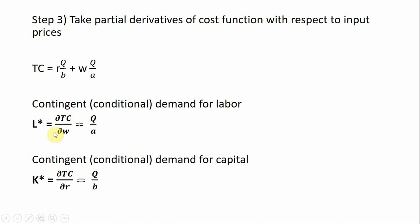Taking the partial derivative of total cost with respect to R, we're just going to get Q divided by B. And that's how you find contingent demand for inputs.